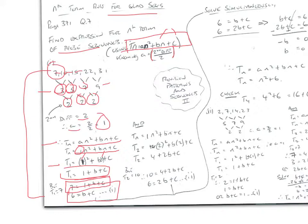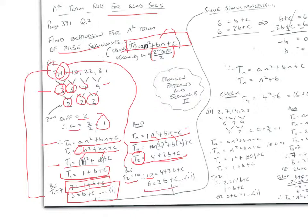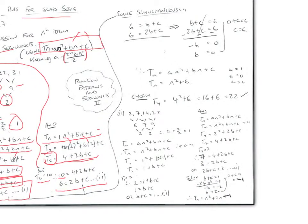Rewriting the form with A = 1, we look at T2: 4 + 2B + C = 10, giving the second equation 2B + C = 6. Solving simultaneously — subtracting the first equation from the second — we get B minus 2B = −B and 6 − 6 = 0, so B = 0.